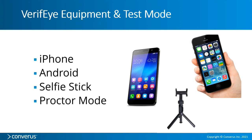For this particular experiment, we used iPhones, Androids, and selfie sticks. The tests were run in what's called proctor mode — instead of having the person take a link and run the test by themselves, it's actually proctored much like a traditional lie detector test would have been. That's how these were conducted.